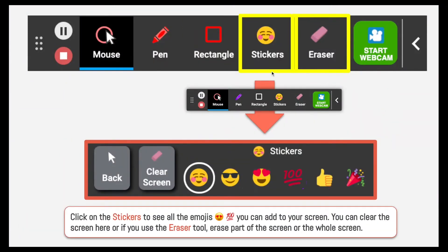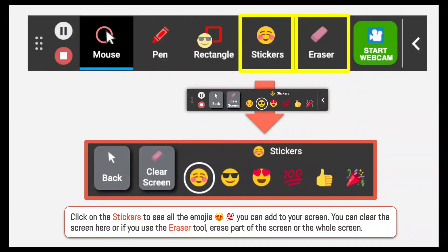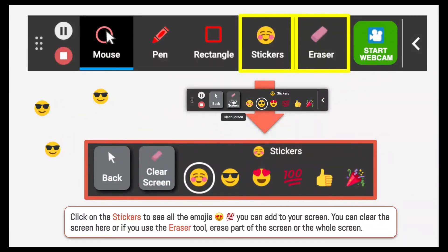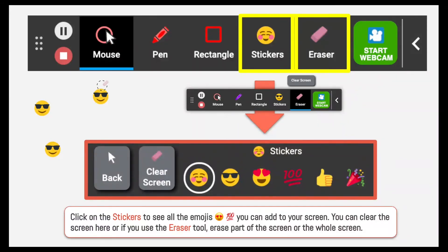Now let's talk about stickers, which we would more likely call emojis. We have several options here. When I select one of these, you can see how my pointer becomes this option and I can place one of these on the screen. The same thing here — I can clear the entire screen or I can use the eraser tool to erase parts of the emojis, or clear the whole entire screen.